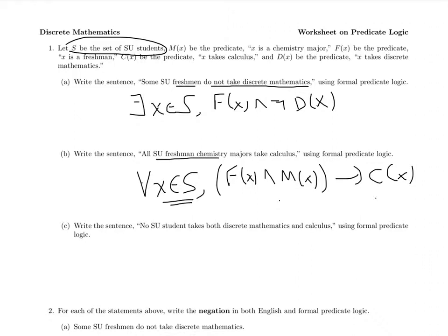And finally, no SU student takes both discrete math and calculus. It makes sense to say it one of two ways. You could say there does not exist an SU student. So that's the way to say it most directly. There does not exist an SU student who takes discrete math and calculus.